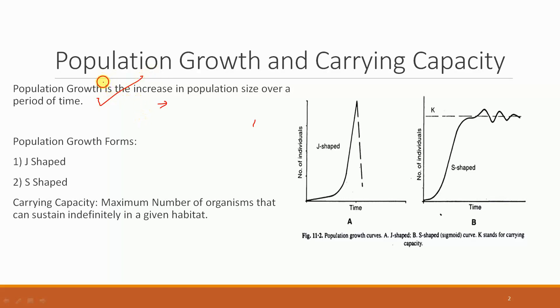Population growth takes place because of many reasons; biotic potential is one of those. Now there are two curves which represent population growth: one is J-shaped population growth and the second is S-shaped population growth.